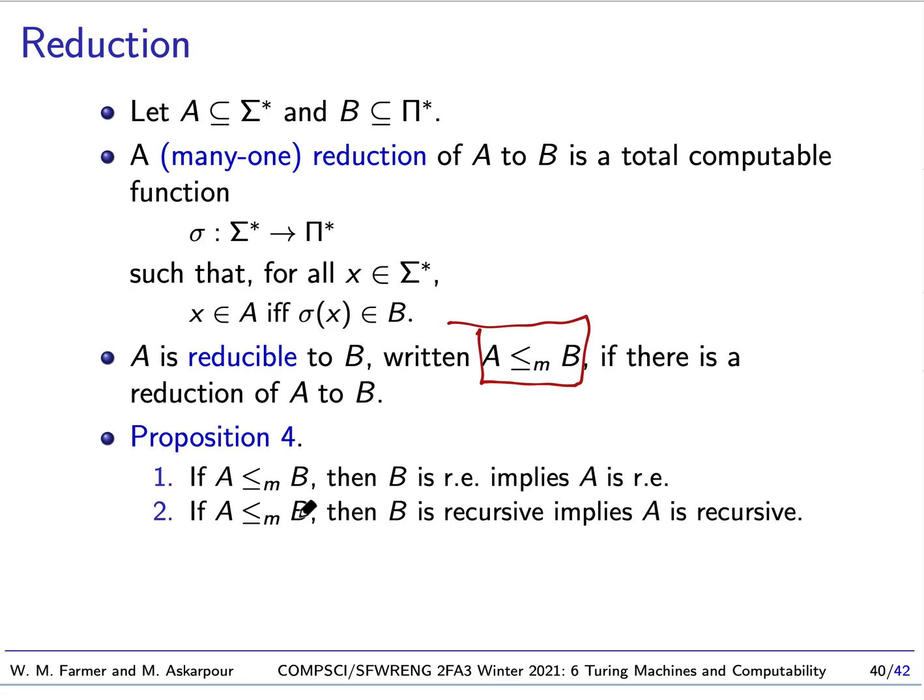So another way of saying it, we can test whether x is a member of A by testing whether sigma x is a member of B, and vice versa. So we say A is reducible, which we write like this, if there is a reduction of A to B. And what this gives, if you take a little time to think about it, it basically gives us the following theorem. If A reduces to B, then B is RE implies that A is RE. And similarly, if B is recursive implies A is recursive. Because basically, the idea is if we have this reduction, and we know how to enumerate B, we can enumerate A by taking members of sigma star, mapping them to members of pi star, and then seeing if they come up in the enumeration of B.